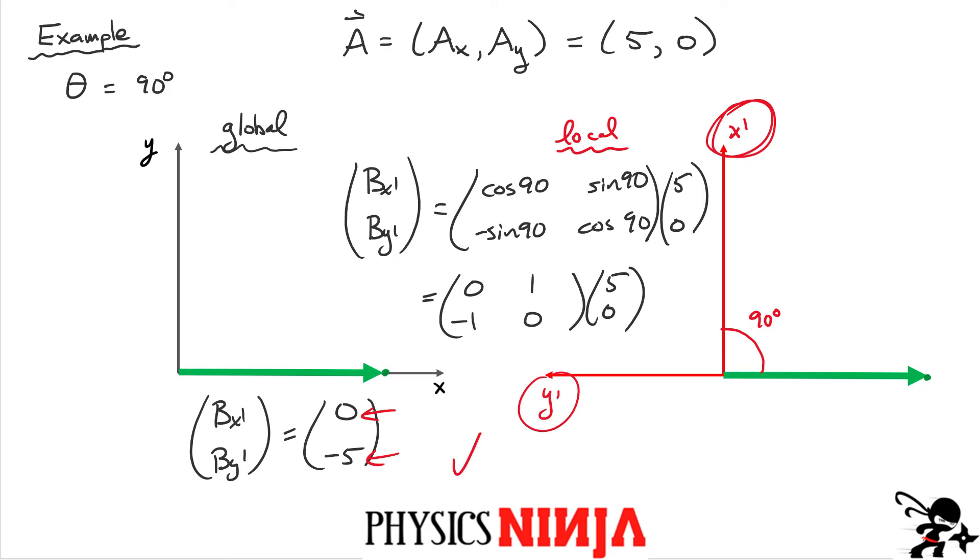And there is a component along the y prime axis, which would be equal to negative 5. Okay, so anyway, it checks out for this simple case. You can do any angle. It doesn't matter. I've tested out for the simple case. You try it out for another angle, 30, 60, 45 degrees. It really doesn't matter. The transformation is general. Okay, thanks for watching, folks. Hopefully you learned something in this video.